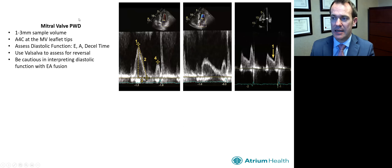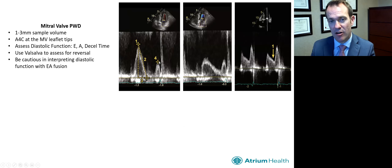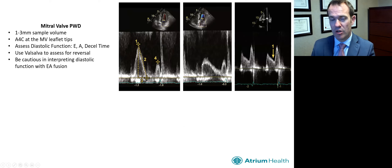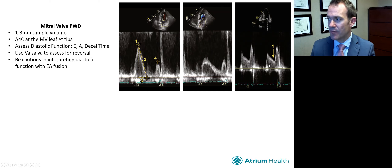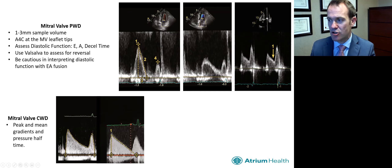For the mitral valve, we place a pulse wave Doppler with a one to three millimeter sample, usually at the tips towards the lateral wall. We measure the peak of the E wave — passive filling — the deceleration time, the peak of the A wave, and may also measure the A wave duration, where the A wave is the active atrial filling. We can use Valsalva, which will drop our preload — in a normal situation both E and A reduce by about 20%. If there are elevated pressures, we may get a reverse EA suggesting higher filling pressures. We have to be careful with tachycardia, as the E and A wave can fuse, making diastolic flow difficult to measure.